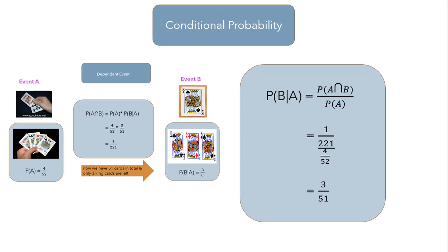Let's verify we are getting the correct outcome for the deck of cards example by applying this formula. According to the formula, P(B|A) = P(A and B) over P(A). We put the value of P(A and B) as 1/221 and P(A) as 4/52, and we get P(B|A) as 3 over 51, which is correct. Now let's see how we can derive Bayes theorem using conditional probability.